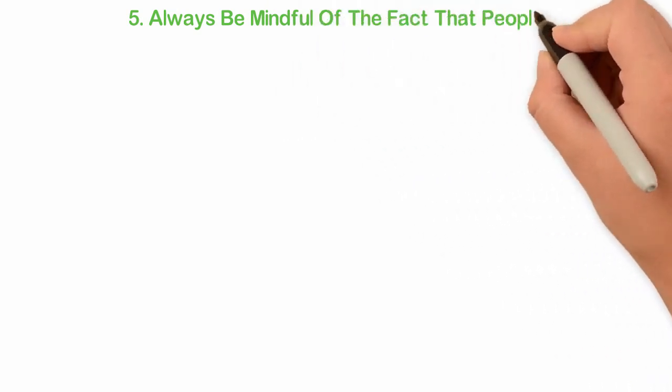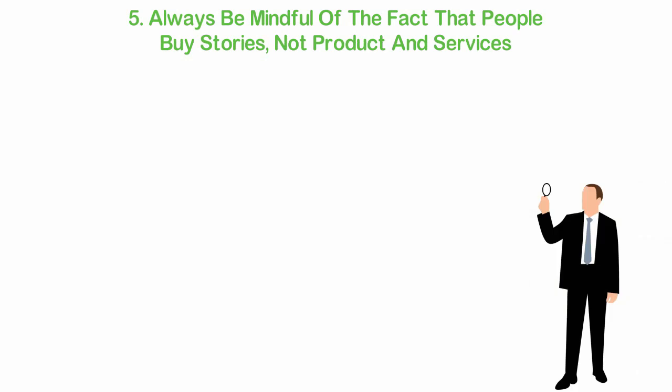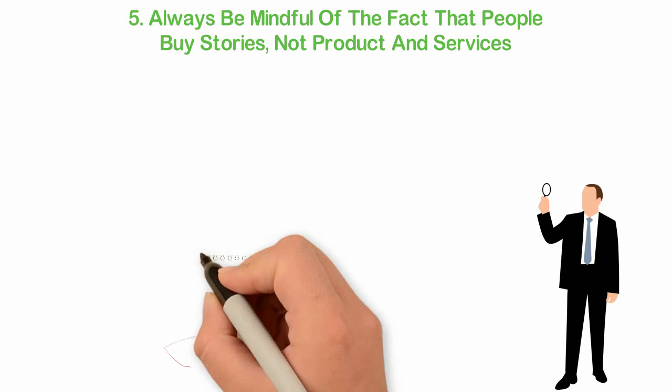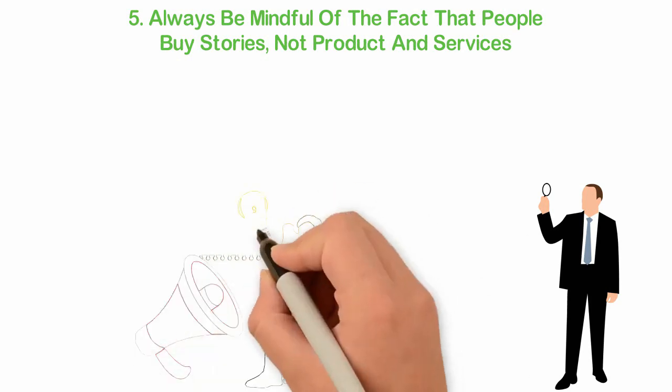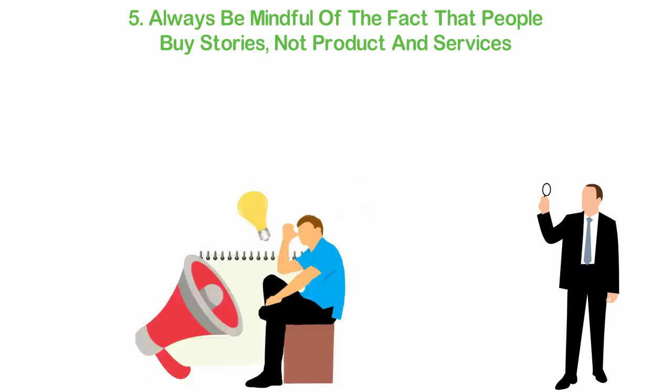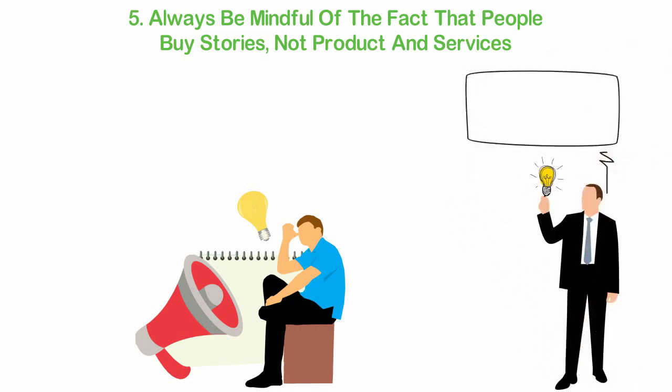Always be mindful of the fact that people buy stories, not products and services. As a salesperson, you need to understand that people buy stories behind a product or a service, not the actual product itself. For instance, why does an extremely dirty pair of shorts worn by David Beckham during the game where Manchester United won the UEFA Champions League in 1999 cost more than a hundred times than a new one? You see, when there are many choices to pick from in the marketplace, on the internet and the likes, the best way to stand out is to add emotions to a commodity by selling the stories behind the product or service. When selling something to someone, always tell a story that pushes the customer's emotional buttons and then make them want to get out of their problem by buying your product or service.